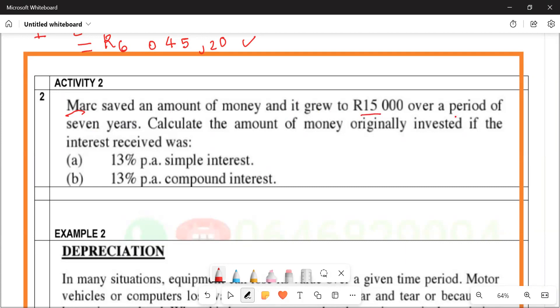R15,000 over a period of seven years. Calculate the amount of money originally invested if the interest received was 13% per annum simple interest.